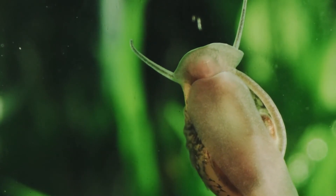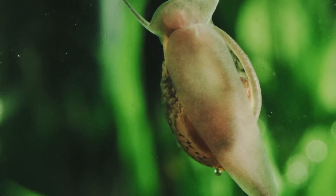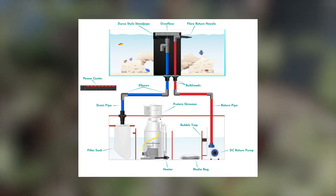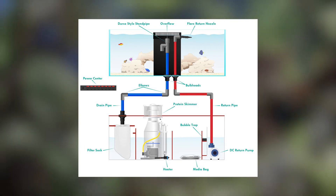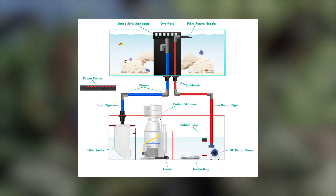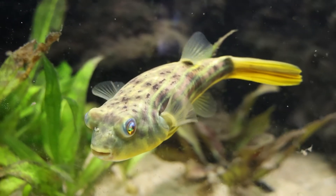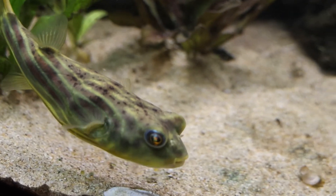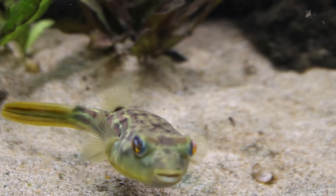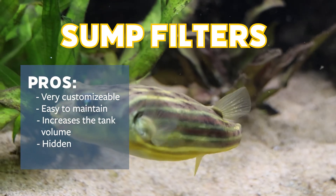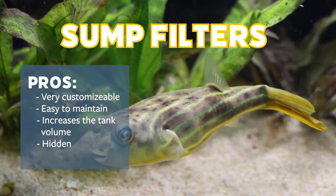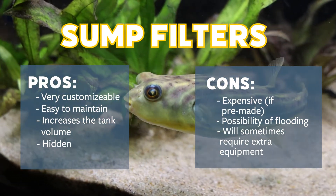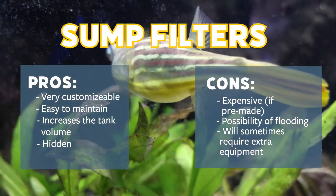Lastly, we'll cover sumps, which are popular for their ability to hide the filtration process and increase water volume while keeping the tank trim and neat. Sumps work by sucking water via an overflow box or drilled holes into a separate system below the main tank, pushing that water through many kinds of media, and then having it pumped via a return pump back into the aquarium. They're often used in larger freshwater systems or saltwater aquaria, but can be used on any system. They're a very good way to increase dissolved oxygen and are very customizable and efficient. They can use all three forms of filtration — mechanical, biological, and chemical. Pros include being infinitely customizable, fairly easy to maintain, able to increase overall tank volume, and attractively hiding the filtration process. Cons are that they're often expensive if prefabricated, there is the possibility of flooding if the pump fails, and they sometimes require an overflow box or drilled tank, which is an additional cost.